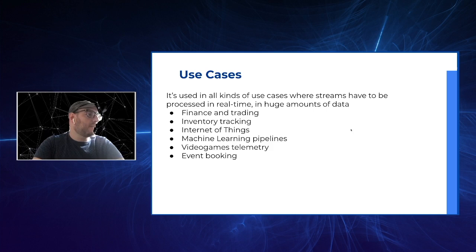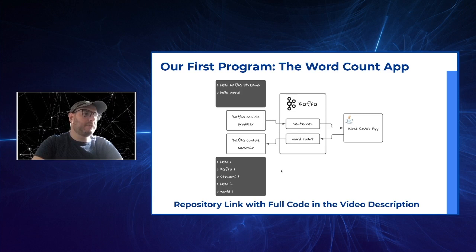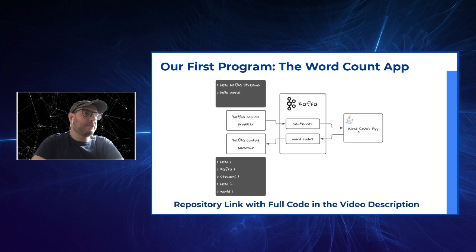So let's take a look at the first program we're going to make — it's the WordCount app. The WordCount app is a very well-known example for getting to know Kafka Streams. Our app will have a Kafka console producer, which we're going to use to create sentences and send them into the sentences topic. Then our application will process these sentences and it will count the amount of times the words appear in our stream. Then the results are going to go to the WordCount topic, which we're going to read with a Kafka console consumer.